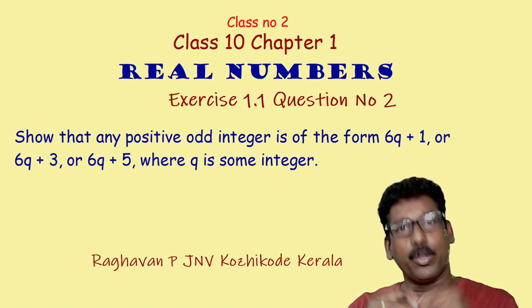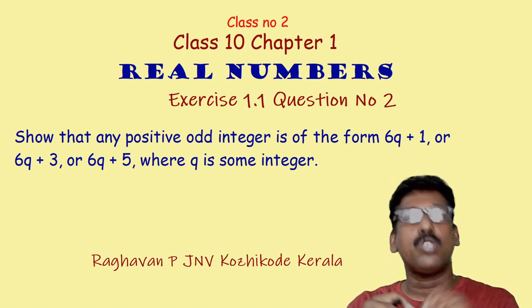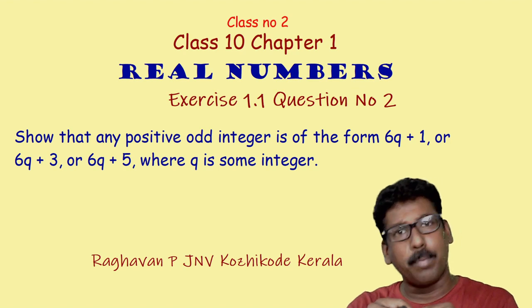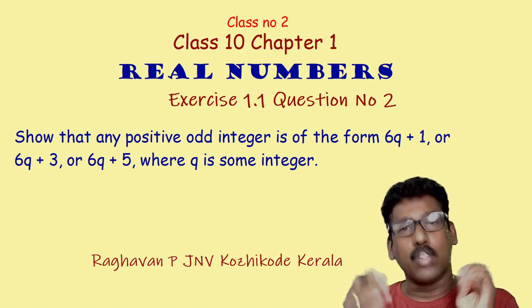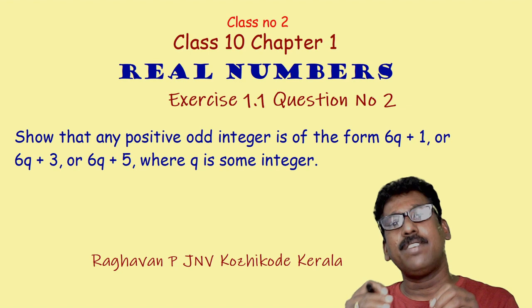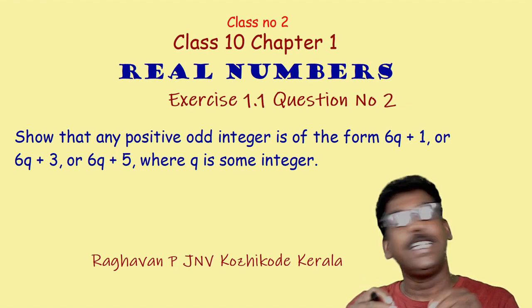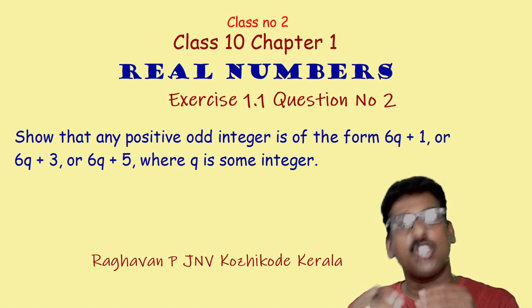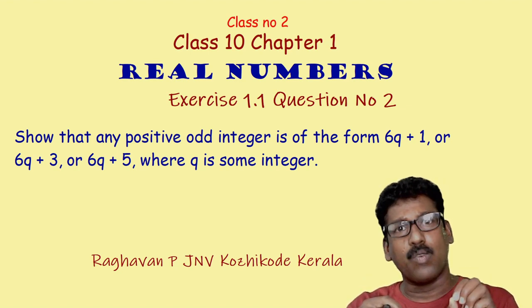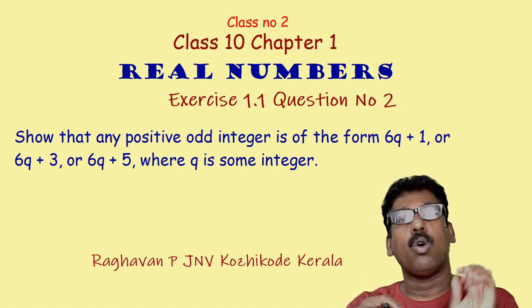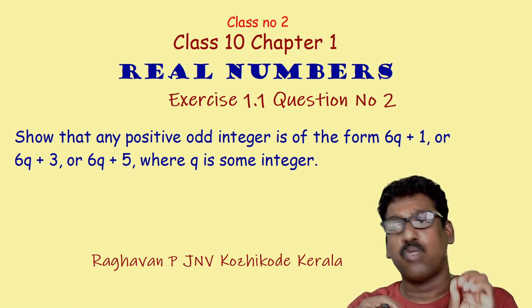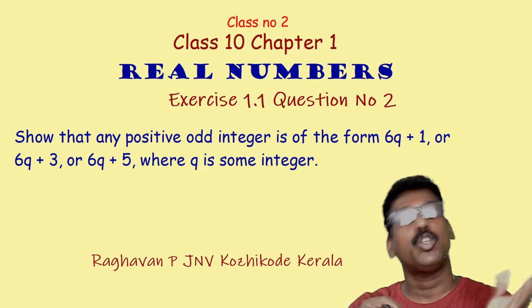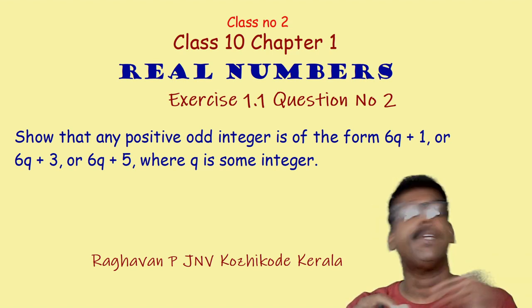In this class I am going to discuss the second question of exercise 1.1. The question is: show that any positive odd integer is of the form 6q plus 1, or 6q plus 3, or 6q plus 5, where q is some integer.